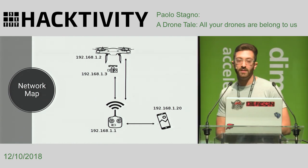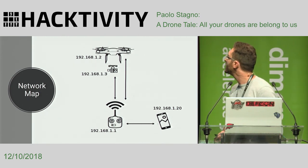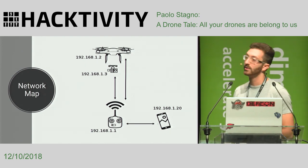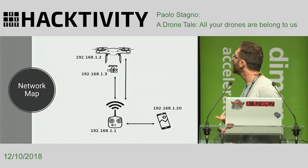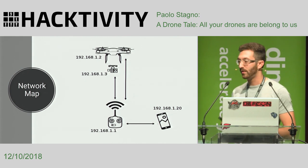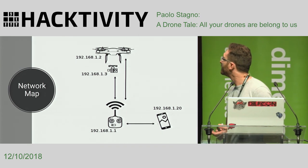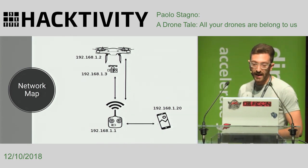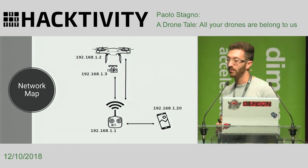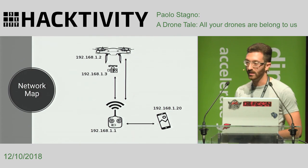The first thing I did was try to understand the network schema. Basically, the ground controller acts as a Wi-Fi access point for the drone and the camera. Drone and camera are two different systems — they are probably separated so that the video feedback does not interfere with the flight controller. There is also the optional usage of a mobile phone where you can retrieve the video feedback on screen, so you can see what the drone is seeing.